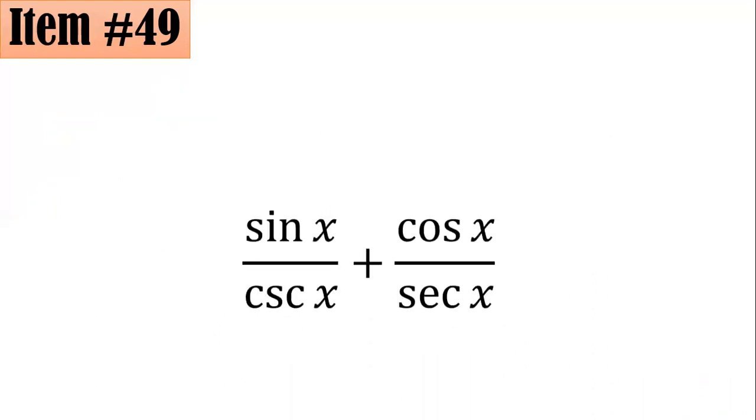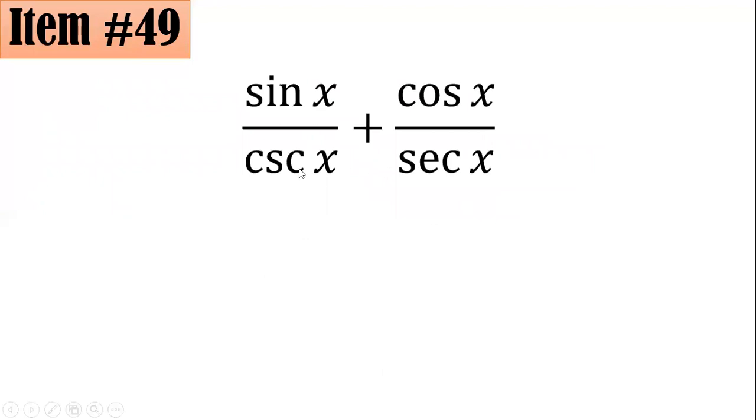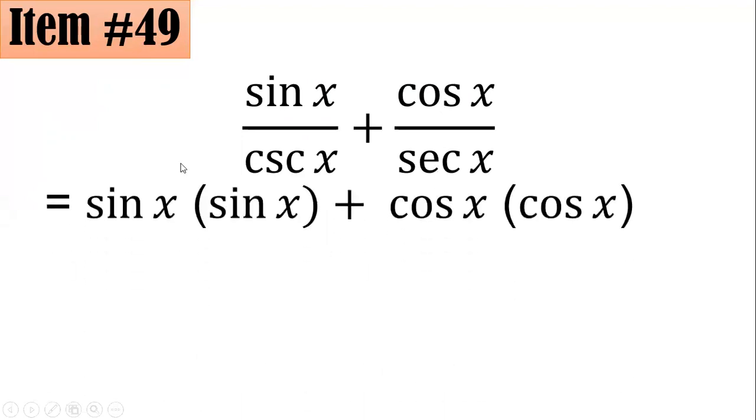So remember, sine and cosecant are reciprocals of each other. Cosine and secant are also reciprocals of each other. Therefore, if I copy the sine x here, the cosecant x in the denominator, when going to the numerator, will become sine x.